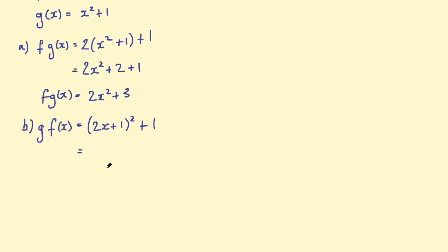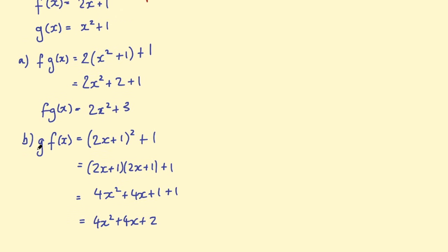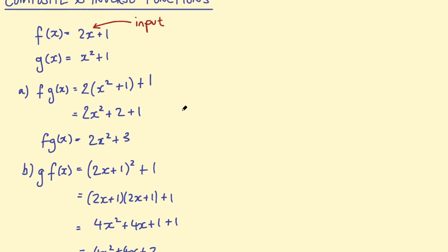Expanding those brackets: 2x times 2x gives 4x squared, plus 4x plus 1, and then plus 1 again. Simplifying, we get 4x squared plus 4x plus 2. Now you notice that g of f is not the same as f of g. That's a key feature of composite functions — the order matters. f of g does not equal g of f. That's the basics of composite functions.